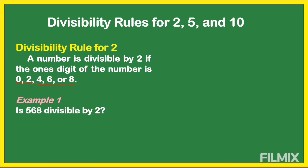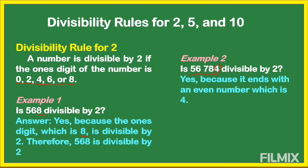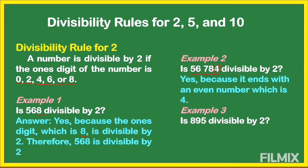Is 568 divisible by 2? Yes, because the one's digit, which is 8, is divisible by 2. Therefore 568 is divisible by 2. Another example: is 56,784 divisible by 2? The answer is yes because it ends with 4, which is an even number. Another example: is 895 divisible by 2? No, because 5 is not an even number.